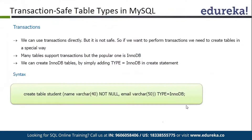We use InnoDB tables. From MySQL version 5.6, the default table type is chosen as InnoDB. Before that, the default table type was MyISAM and we had to manually alter our table to make it InnoDB, if we were going to apply any transactions or foreign key constraints. MyISAM tables are basically for reads - if we are doing only reads from a particular table, we use MyISAM. But if writes are more and reads are less, we should prefer InnoDB tables.